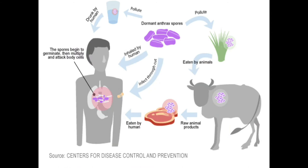Anthrax can be found naturally in soil and commonly affects domestic and wild animals around the world. Anthrax is spread by contact with the bacterium's spores, which often appear in infectious animal products. Contact is by breathing, eating, or through an area of broken skin. It is an occupational hazard for veterinarians, farmers, and individuals who handle animal wool, hair, hides, or bone meal products.